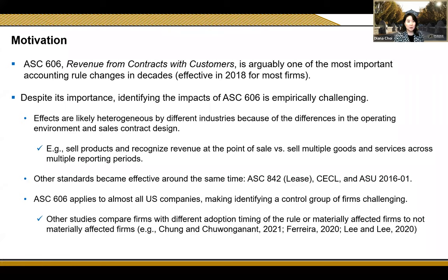As you all know, AAC 606 Revenue Recognition Standard is arguably one of the most important accounting rule changes in decades. Despite its importance, identifying the impacts of the standard is empirically challenging. First of all, the effects are likely to be heterogeneous by different industries because of differences in the operating environment and sales contract design. For example, the impact might not be significant for firms that sell products and recognize revenue at the point of sale compared to firms that sell multiple goods and services across multiple reporting periods.